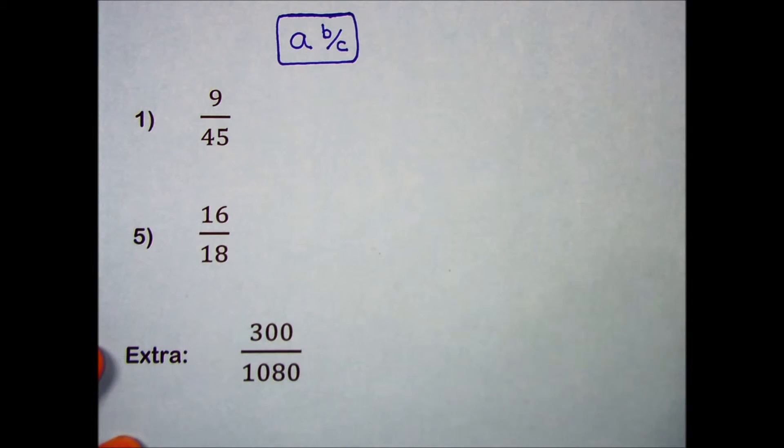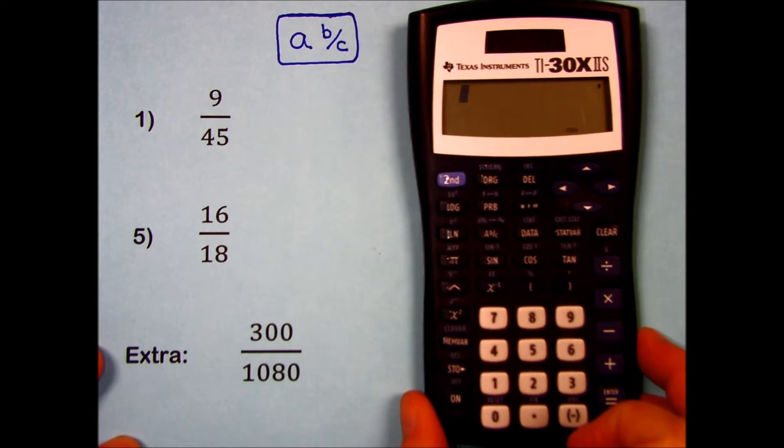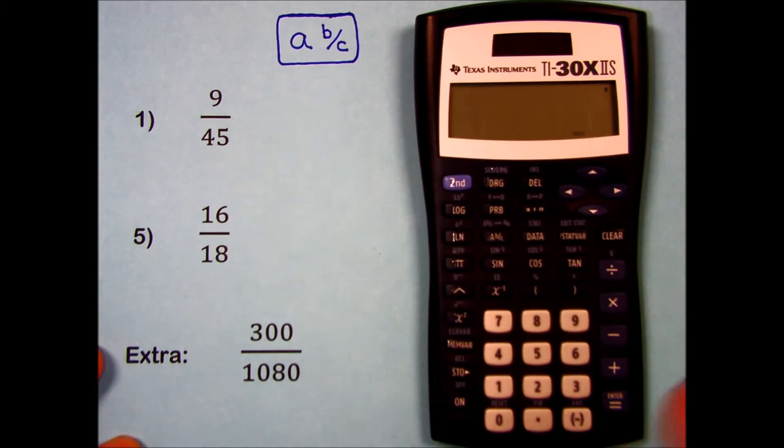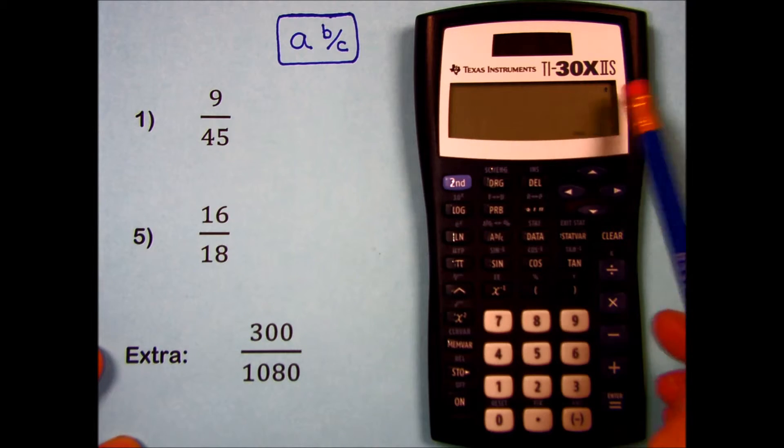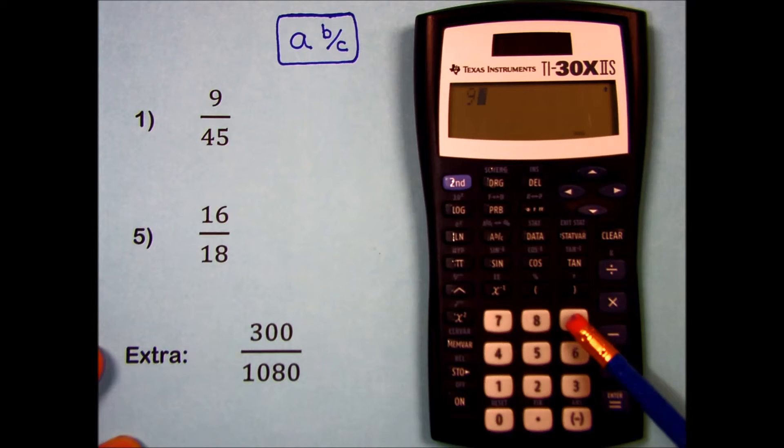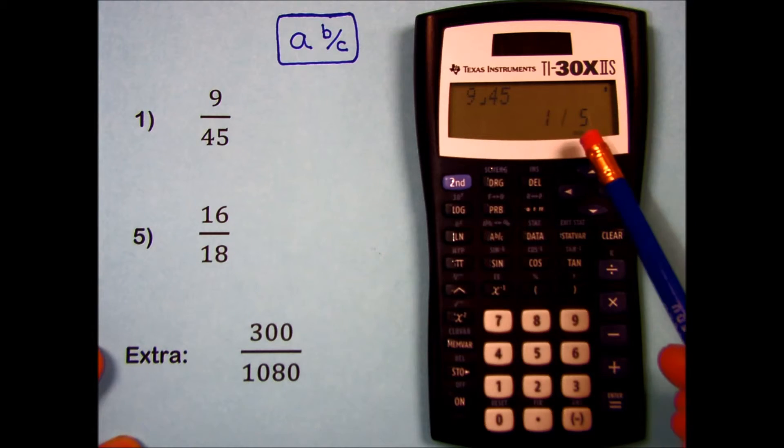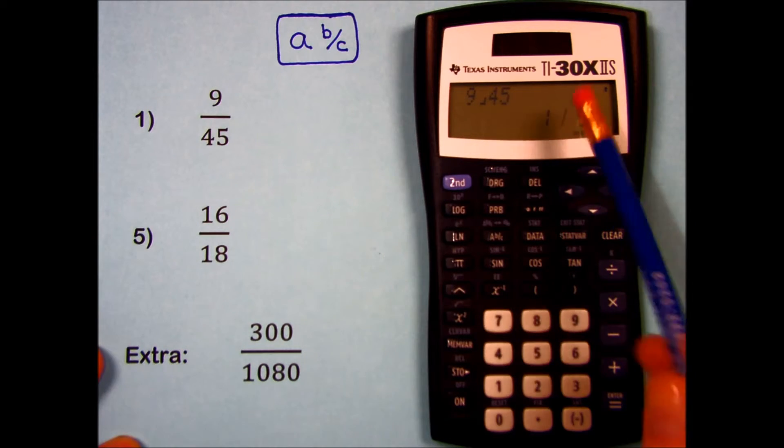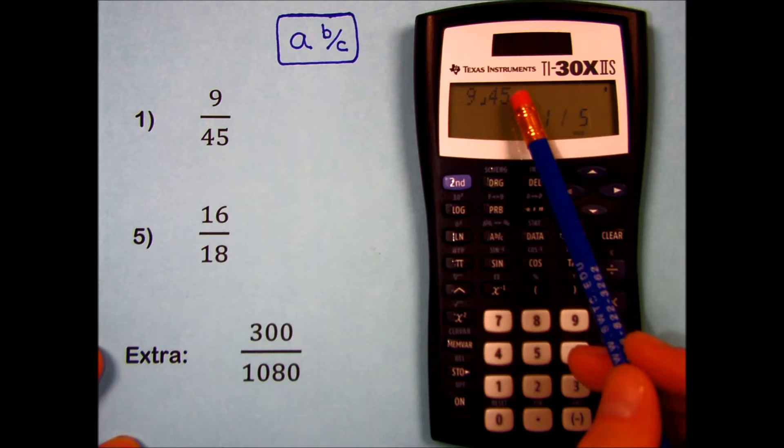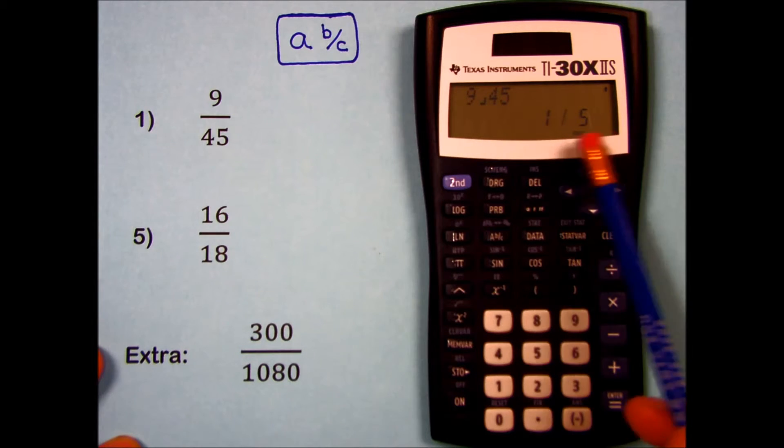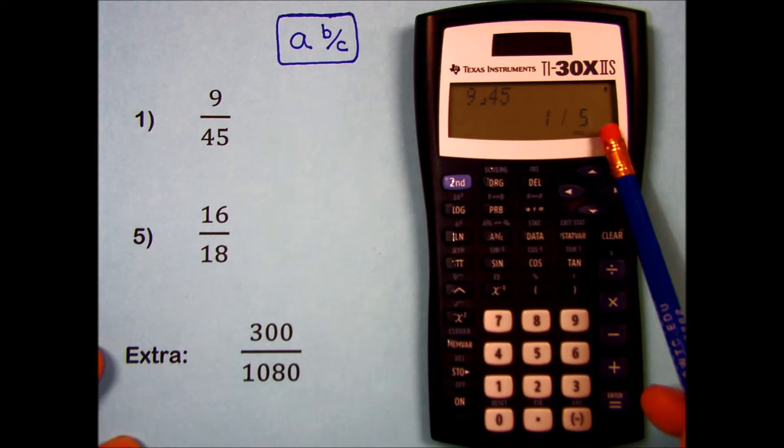Let's now also look at the type of calculator with a slightly larger display, a two-line display, the TI-30X 2S. 9, fraction key, 45, press equals, and it's reduced to 1/5. It maintains what I typed in on the first line and gives me the answer in lowest terms on the second line.